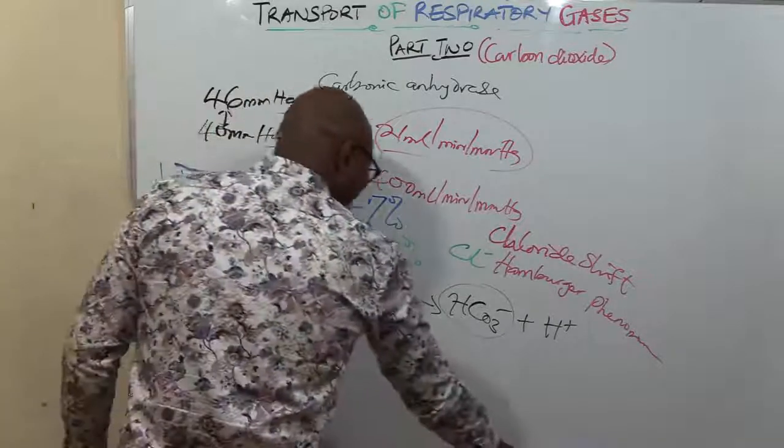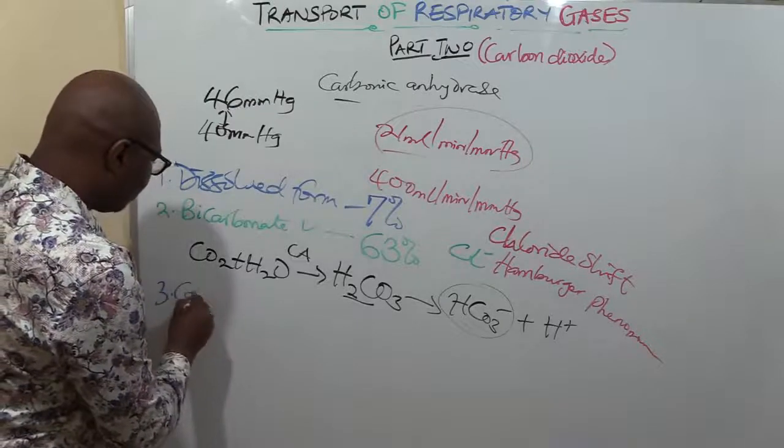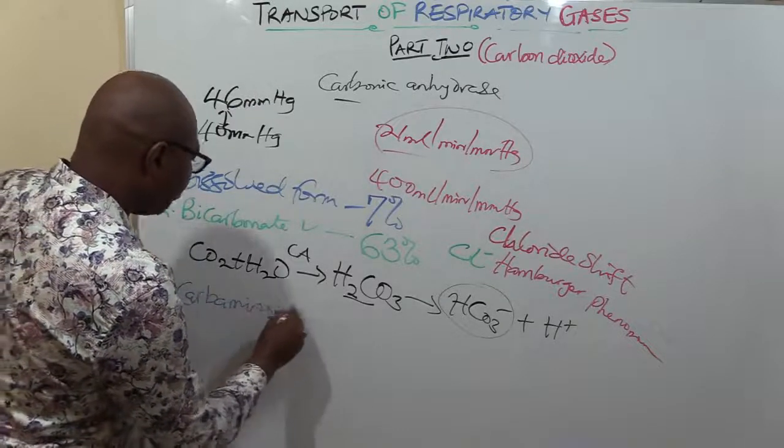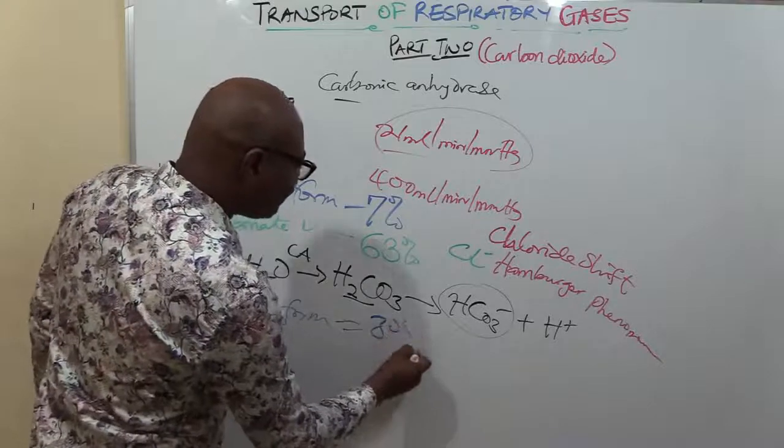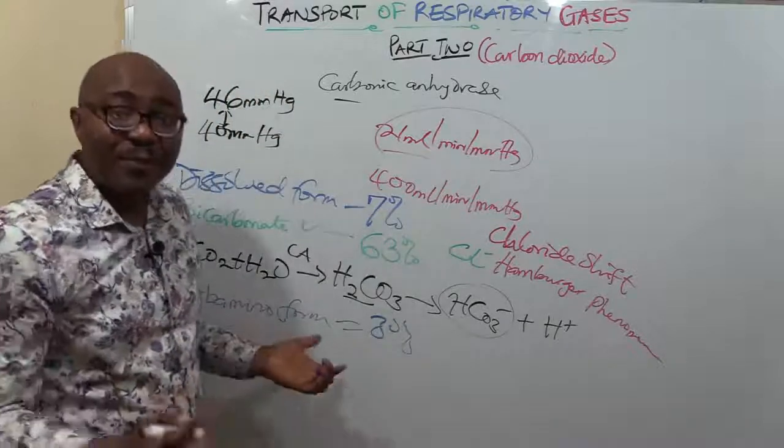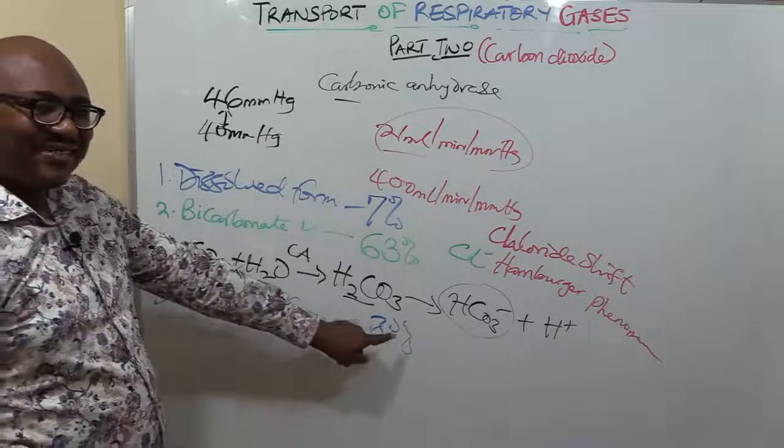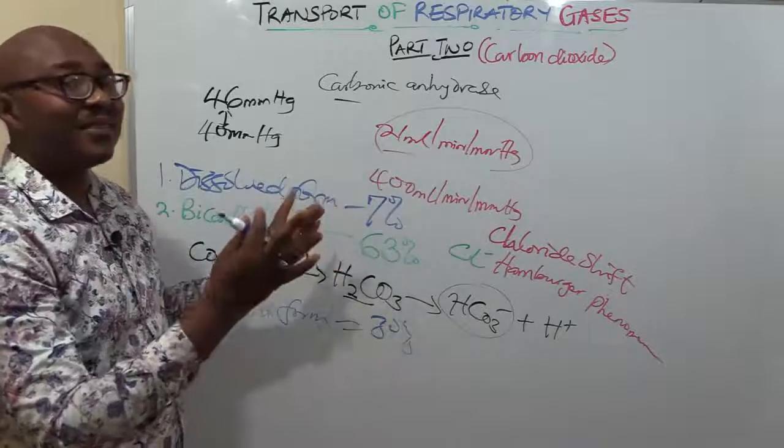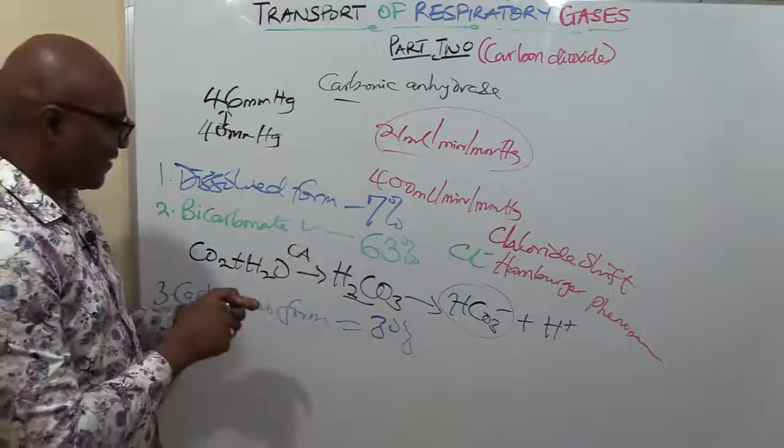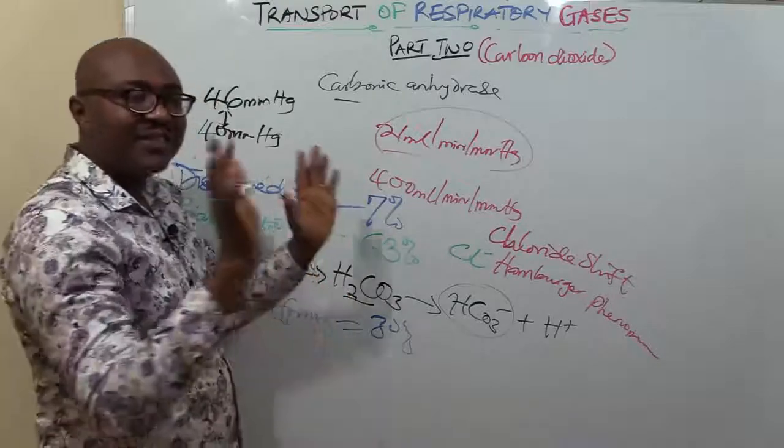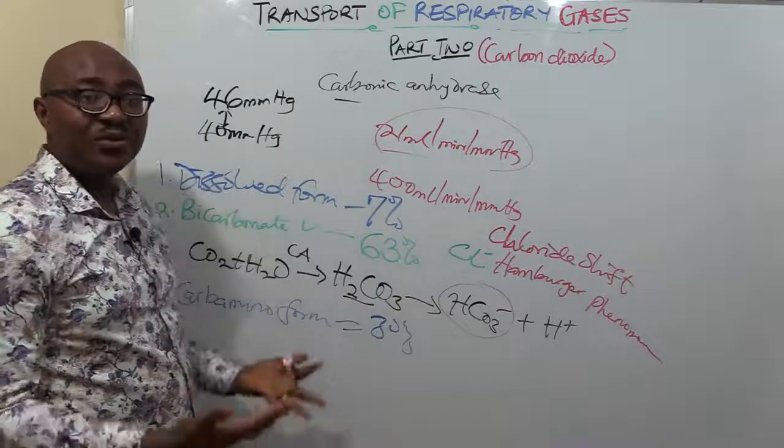The final form is the carbamino form. This carbamino form is 30 percent of it. This form binds to hemoglobin, so it's not only oxygen that binds to hemoglobin. Hemoglobin also transports CO2, but it's just 30 percent, whereas in oxygen it's 97 percent. Thirty percent of it is bound to hemoglobin and transported to the lungs.